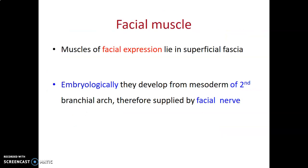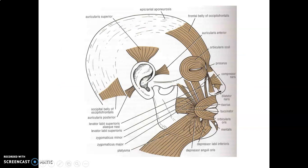The face has muscles of facial expression, which lie in the superficial fascia — they are superficial muscles. These muscles are mesodermal in origin and come from the second pharyngeal arch. All derivatives of the second pharyngeal arch are supplied by the seventh cranial nerve, which we call the facial nerve.